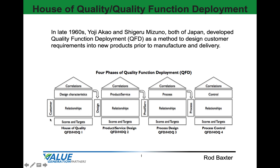Starting with customer requirements, we'll establish design characteristics, which we'll carry into house 2. Using those, we'll establish product or service characteristics, which we'll carry into house 3. Then we'll define process characteristics, carried forward into house 4, where we'll finally define control characteristics.